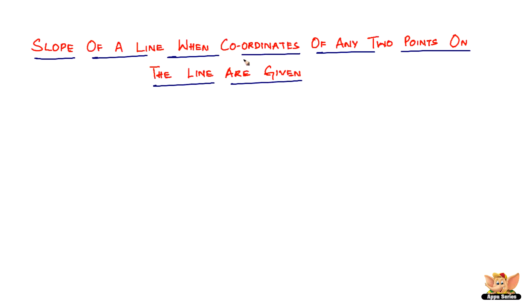But in this case, we do not have the angle to find out the slope. If we have the angle, it is as simple as m equals tan theta. But we do not have the angle in which the line is inclined with the positive x-axis. In this video, we are going to find slope in a different way — when we do not have the angle, but when we have the coordinates of any two points on the line.